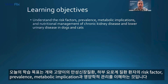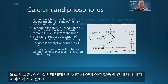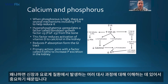The objectives for today are to understand the risk factors, the prevalence and metabolic implications, as well as the nutritional management of chronic kidney disease and lower urinary disease in dogs and cats. But before we start talking about urinary disease and renal disease, I just want to cover a little bit about calcium and phosphorus metabolism, because it's important for the further understanding of some of the metabolic processes that occur during urinary disease and renal disease.